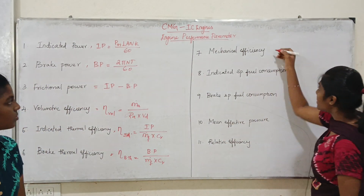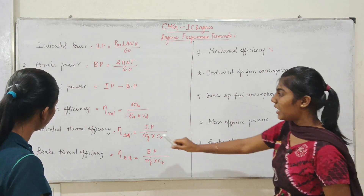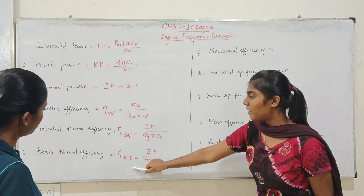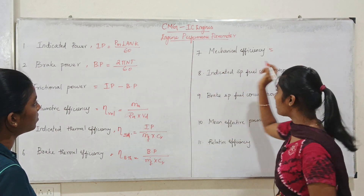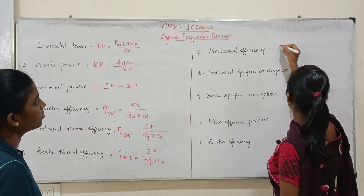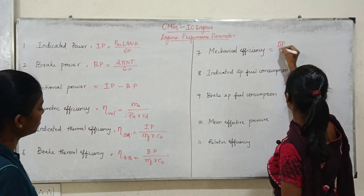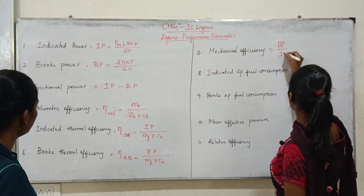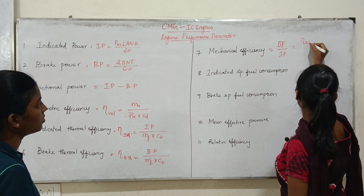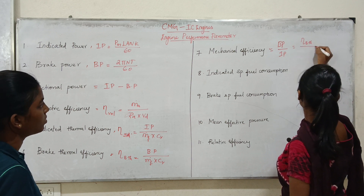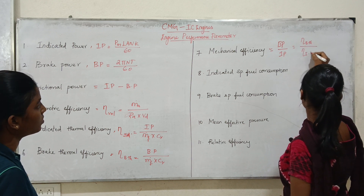Mechanical efficiency is the ratio of brake thermal efficiency to the indicated thermal efficiency, which equals BP divided by IP, which is equal to η_bth divided by η_ith.